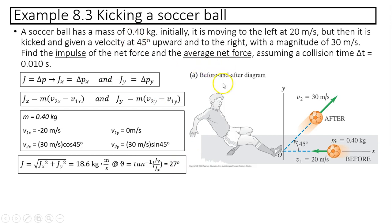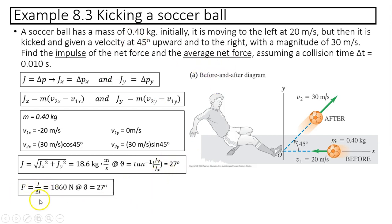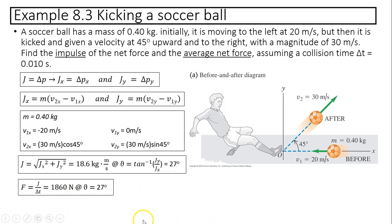For the net force: net force equals J divided by delta t — that is 18.6 divided by 0.01, giving 1,860 Newtons. The net force has the same direction as J: 27 degrees above horizontal.